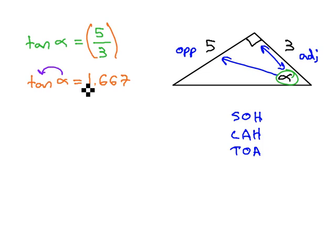And because we can't plug alpha into the tangent on our calculator, we're going to have to use the inverse tangent of the ratio. The inverse tangent of 1.667 must be equal to alpha.